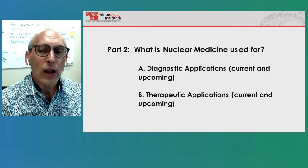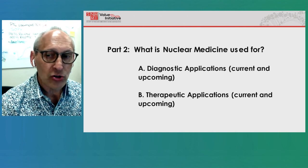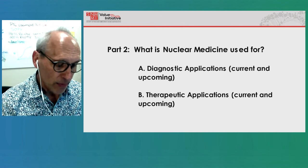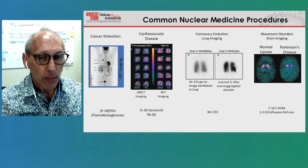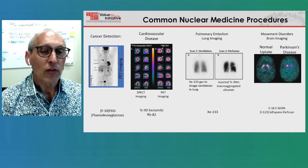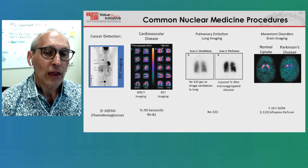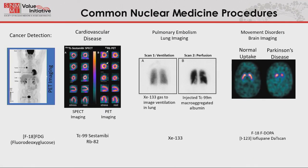Now let's go into what nuclear medicine is used for — some diagnostic applications, current and upcoming, and then therapeutic applications. Here's a brief overview of bread-and-butter nuclear medicine imaging we've been doing for decades: cancer imaging with FDG and PET, cardiovascular disease using SPECT or PET imaging, pulmonary embolism imaging using a radioactive gas that we inhale in combination with an injected dose to see where air and blood are going. We also look at movement disorders, and we can do amyloid imaging for Alzheimer's disease. These are all exciting but established.